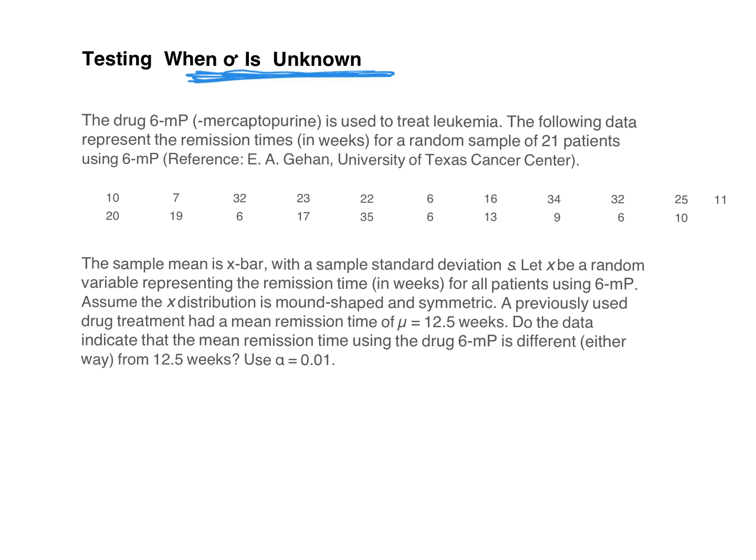So, looking at this example, the drug 6MP is used to treat leukemia. The following data represent the remission times in weeks for a random sample of 21 patients that use that particular drug. The sample mean is X bar, notice it's not given to you, with a sample standard deviation S, notice it's not given to you. Let X be a random variable, represent the remission time in weeks for all patients using 6MP. Assume the X distribution is mound-shaped and symmetric. So we need that because there's only 21, which is less than 30. So they're kind of telling us that we can use the normal curve.